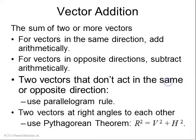If two vectors are not in the same direction or the opposite direction, you can use the parallelogram rule. And if they're at right angles to each other, you can find the magnitude using the Pythagorean theorem. So if V is the vertical vector and H is a horizontal vector, then the resultant comes from R squared equals V squared plus H squared.